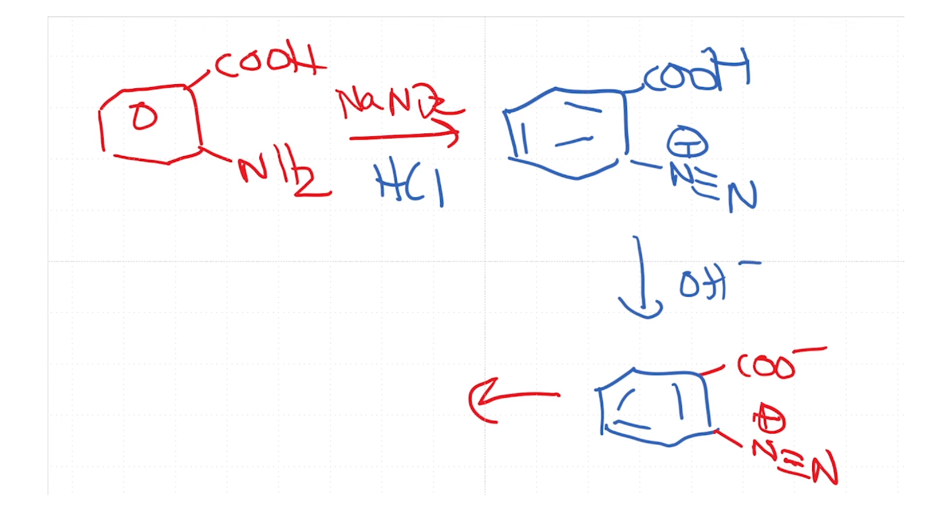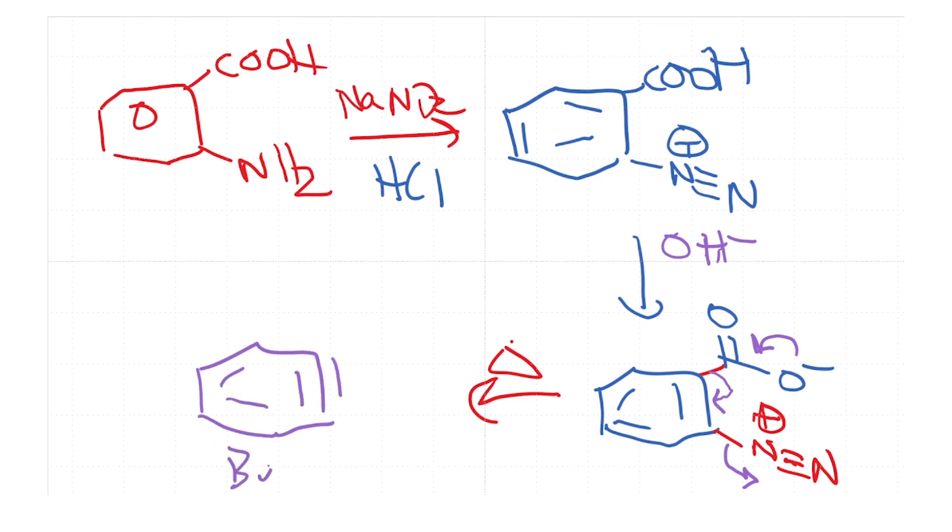So now when you heat this up to high temperatures, what can happen is that you have a loss of carbon dioxide, CO2, O minus. Okay. So you can have a loss of CO2 and this subsequently can move here and kick out nitrogen gas. So the intermediate that is formed is the benzyne.